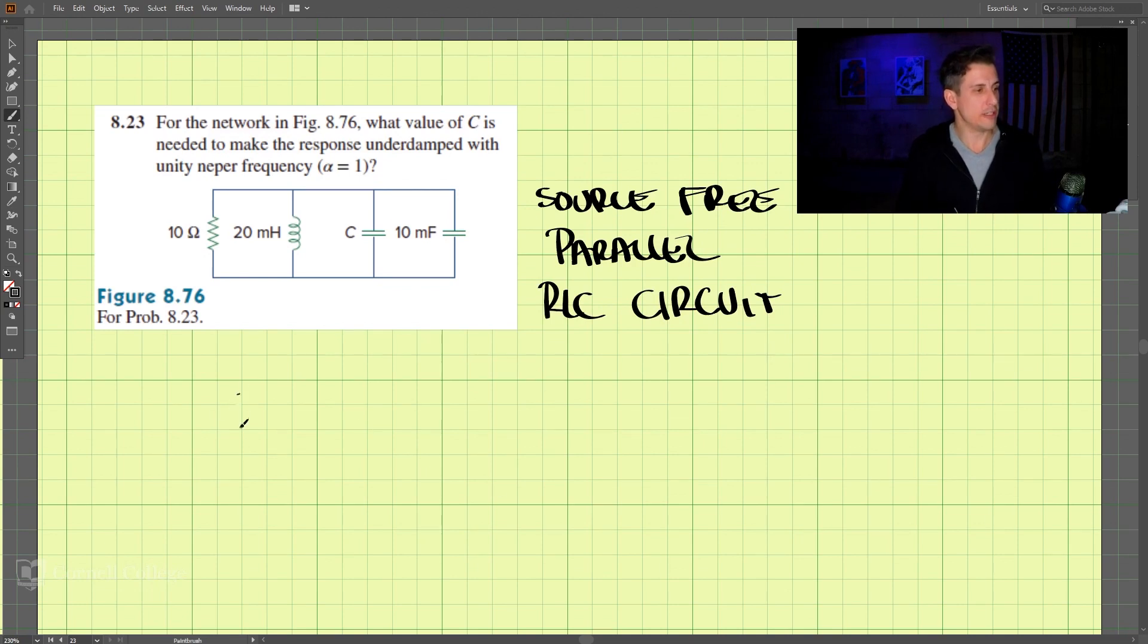So what we're looking to have here is a circuit that has everything in parallel, and what we're trying to find is this value C. We're trying to find this value C here. And we know the resistance is 10 ohms, and the inductance is 20 millihenry.